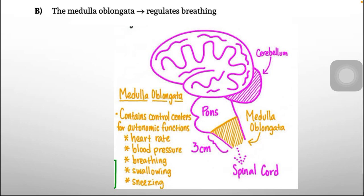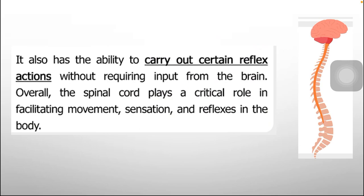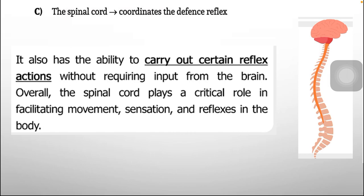Option B: the medulla oblongata regulates breathing — the medulla oblongata contains control centers for autonomic functions including heart rate, blood pressure, and breathing, so this is also correct. Option C: the spinal cord coordinates the defense reflex — the spinal cord can carry out reflex actions without input from the brain and plays a critical role in facilitating movement, sensation, and reflexes. This is also correct.